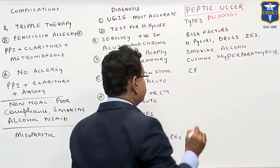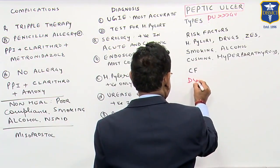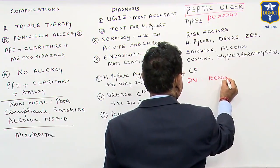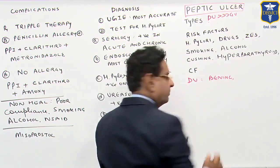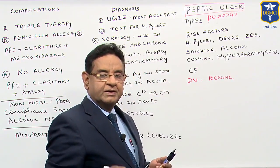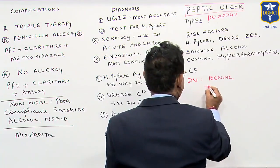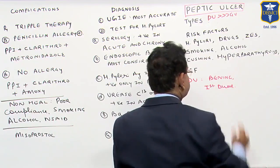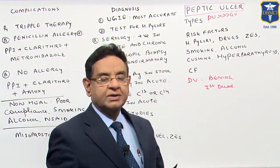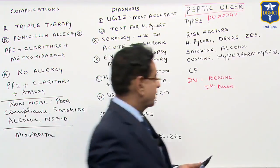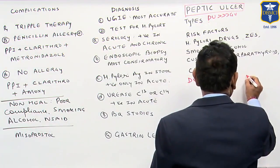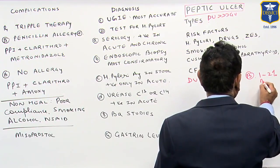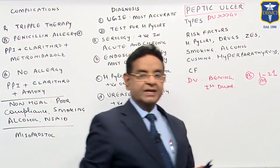Regarding the duodenal ulcer, they are always benign and the most common site is the first part of the duodenum. But in contrast, gastric ulcer — they are benign, but in 1 to 2 percent of cases they may be malignant also.